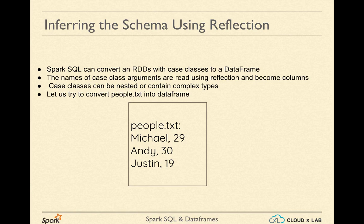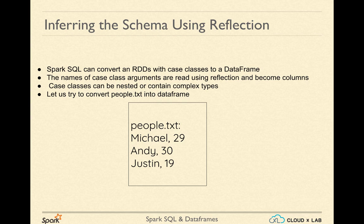Let us take a look at the first approach of converting an RDD into a DataFrame. The Scala interface for Spark SQL supports automatically converting an RDD containing case classes to a DataFrame. The case class defines the schema of the table. The names of the arguments to the case class are read using reflection and become the names of the columns. Case classes can also be nested or can contain complex types such as SEQs or arrays. This RDD can be implicitly converted to a DataFrame and then registered as a view. Views can be used in subsequent SQL statements.